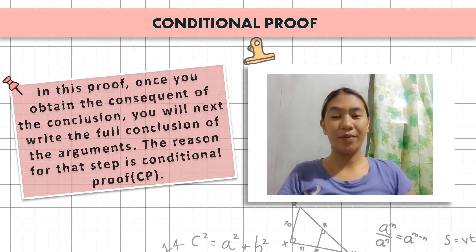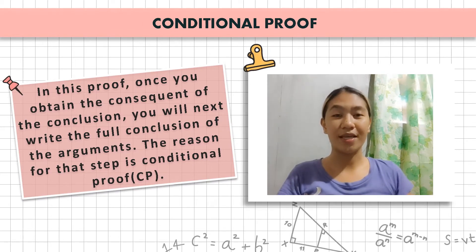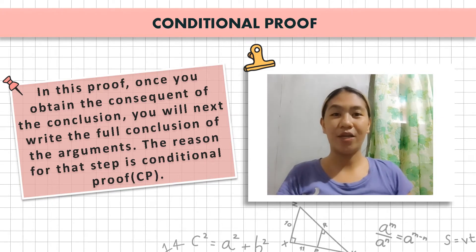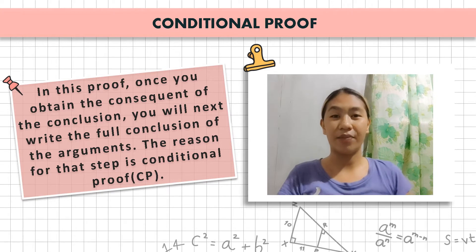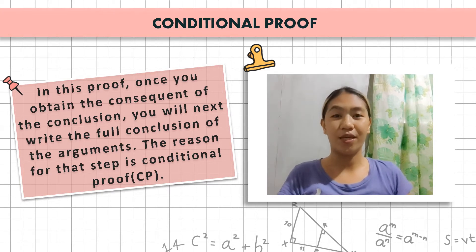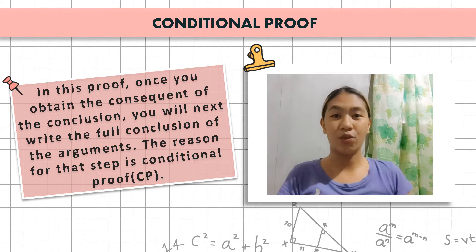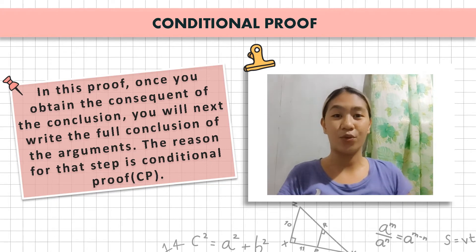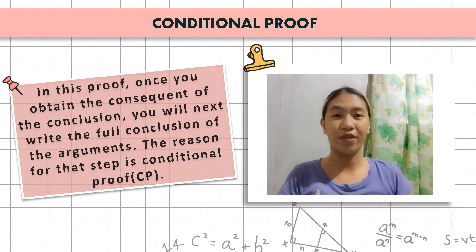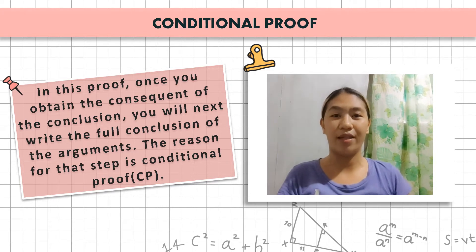Good afternoon, I'm Berlin Benoza. This is Math 1A and today I'm going to discuss conditional proofs. The idea behind conditional proof is that we want to prove that a conditional statement P implies Q is true. We begin by assuming that the antecedent P is true, and by using replacement rules and rules of inference, we must show that the consequent Q is also true.